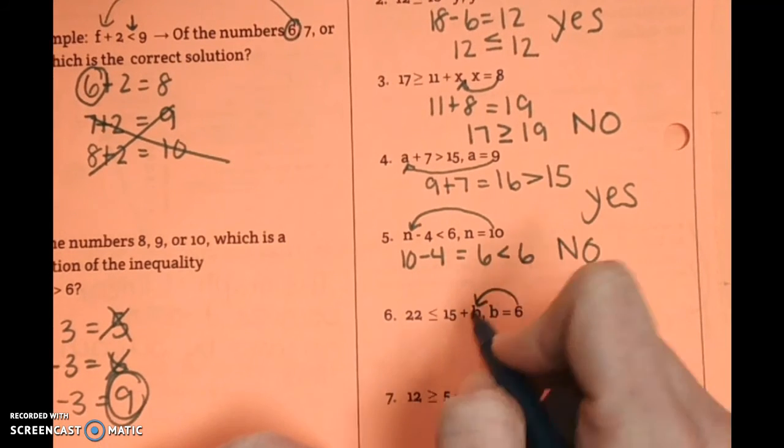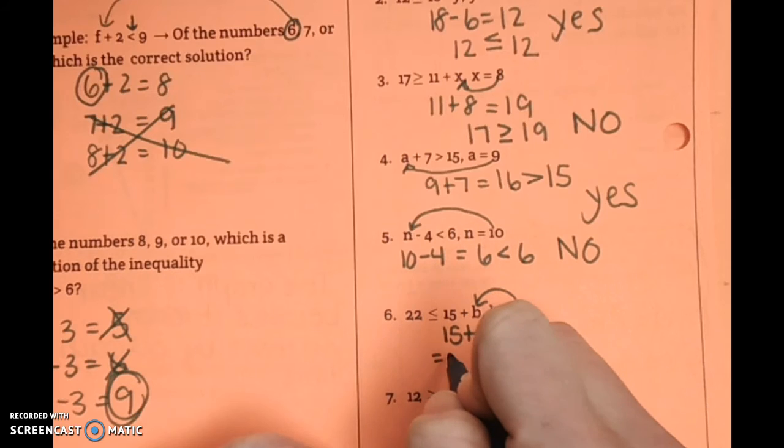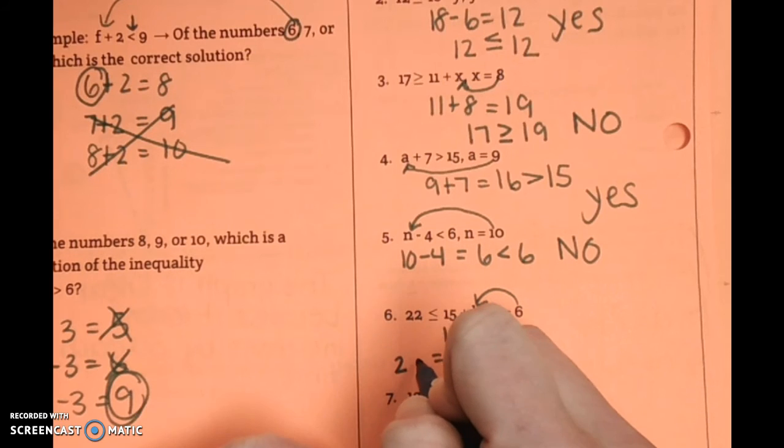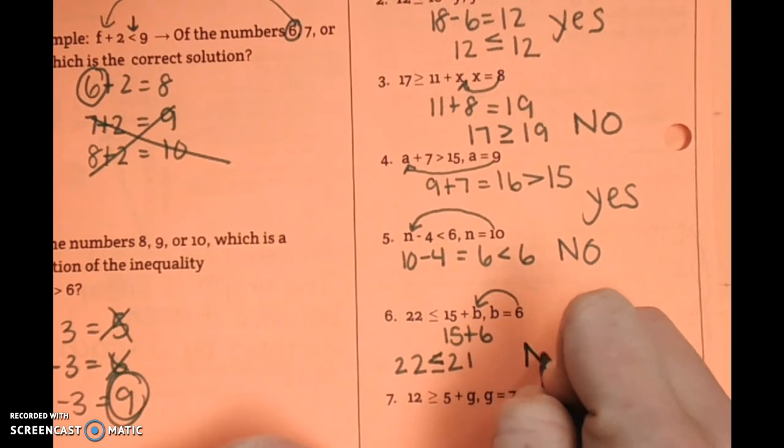Now, we're going to plug 6 in. We have 15 plus 6. That equals 21. Is 22 less than or equal to 21? No.